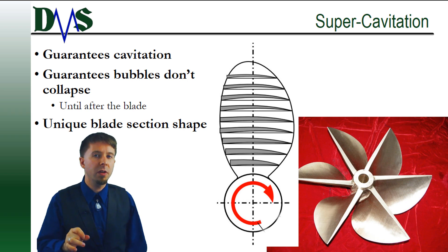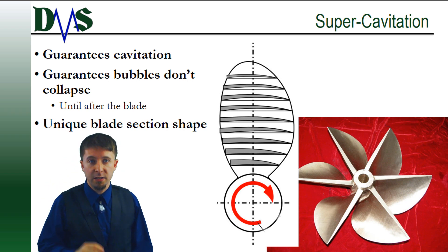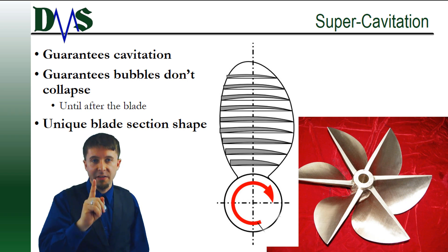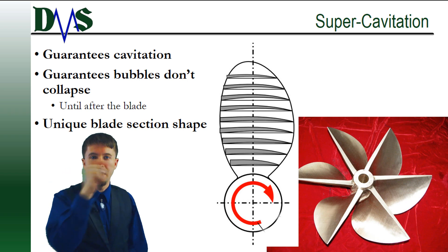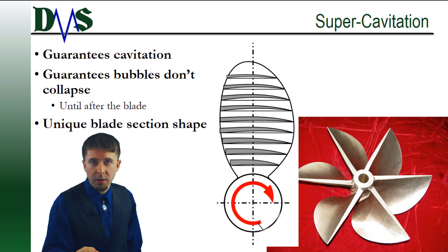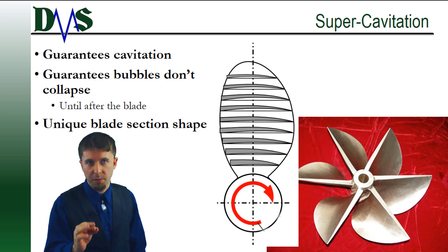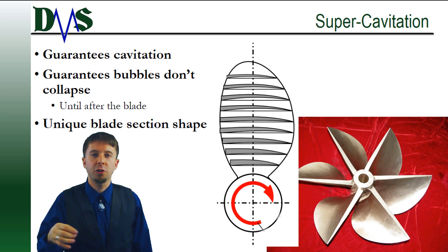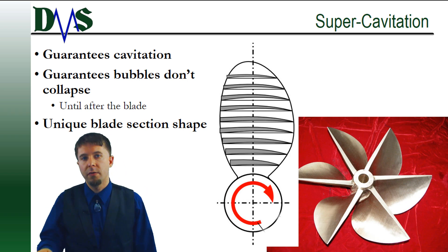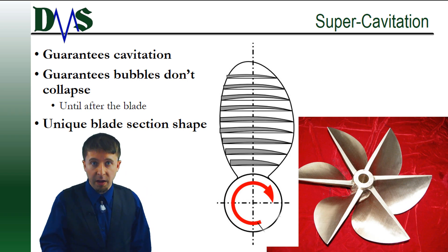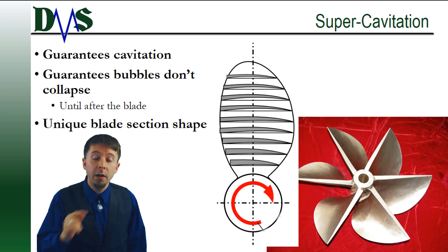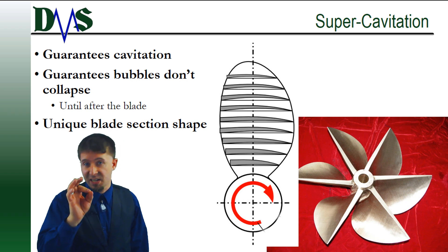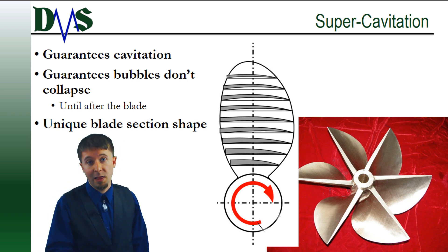Remember, the cavitation is only dangerous when the bubble collapses. A super cavitating propeller works carefully to ensure that the bubble never collapses until it leaves the propeller blade. These propellers show a distinctive wedge shape when viewed in cross-section. That wedge-shaped cross-section means that the pressure continues to drop as the bubbles travel across the blade face. If the pressure keeps dropping, the bubbles never collapse until they leave the propeller blade, so the propeller remains safe from cavitation damage even though it's causing lots of cavitation.